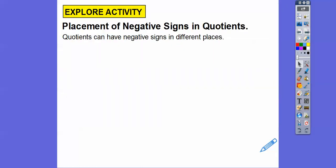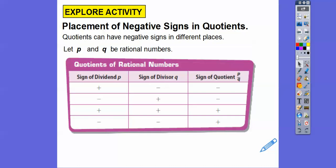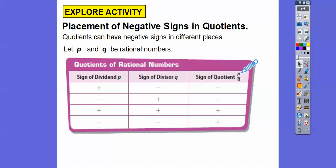So the placement of negative signs in quotients — quotients can have a negative sign in different places. If one is positive and one is negative, or one is negative and one is positive, then the sign is going to be negative. If they're both positives, it's positive, and if they're both negatives, it's also negative. It's just like multiplying.